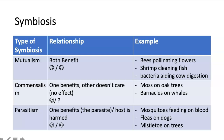Commensalism is where you have one organism benefiting while the other one doesn't really care — there's no real effect for it. For example, you could have moss hanging on oak trees. The moss is not actually taking nutrients from the oak trees, so it's not harming it.